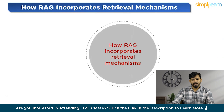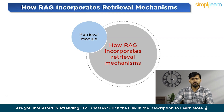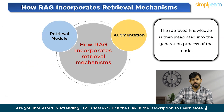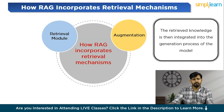Here is how RAG incorporates retrieval mechanisms. The first component is the retrieval module — a module responsible for accessing external knowledge sources such as large text corpora or knowledge graphs. This module retrieves relevant passages or entities from a knowledge base based on the input query or context. Next is augmentation, where the retrieved knowledge is integrated into the generation process, enriching the model's understanding with additional context and information to generate more accurate and contextually relevant responses.